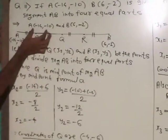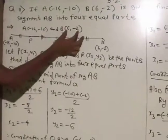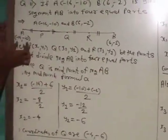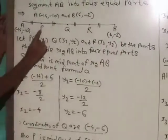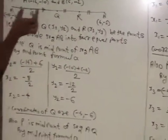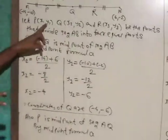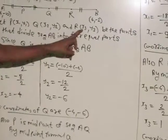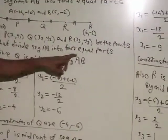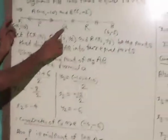A(-14, -10) and B(6, -2) are the given points. Draw the segment AB. The 3 points P, Q, and R divide this into 1, 2, 3, and 4 equal parts. Let P(x₁, y₁), Q(x₂, y₂), and R(x₃, y₃) be the points that divide segment AB into 4 equal parts.